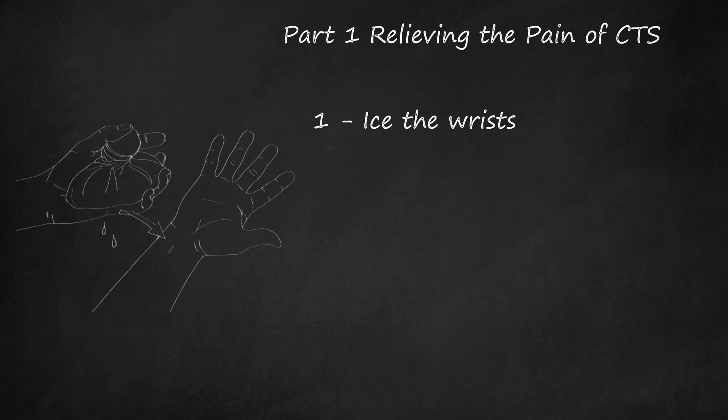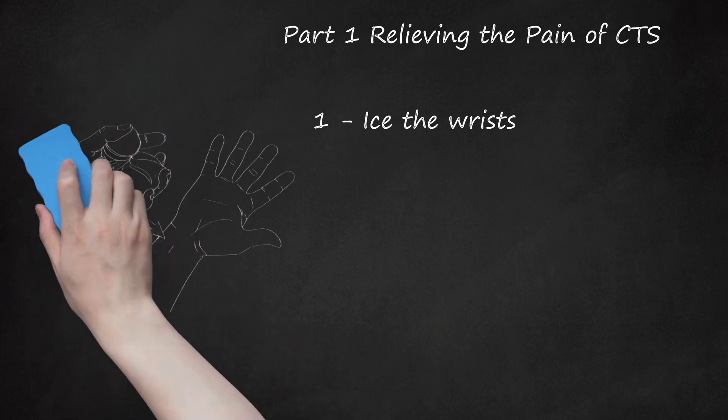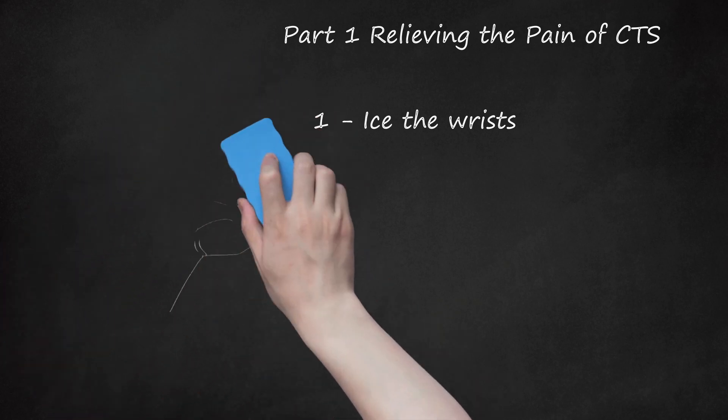Some people find that alternating cold and hot therapies can be effective for reducing carpal tunnel pain. To do this, alternate between an ice compress and a hot compress for 1 minute each over the course of 5 to 6 minutes. If alternating between hot and cold therapies, you can repeat the treatment routine 3 to 4 times each day.